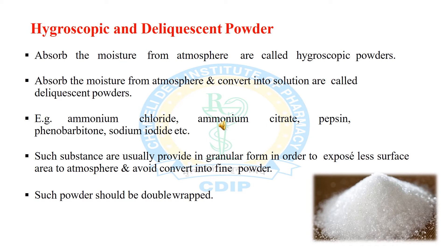Certain powders absorb moisture to such a great extent that they go into solution; these are called deliquescent powders. The definition of deliquescent: powders that absorb moisture from the atmosphere to such an extent that they convert into solution. Examples of such substances include ammonium chloride, ammonium citrate, pepsin, phenobarbitone, and sodium iodide.